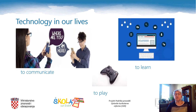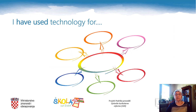In our lives we usually use technology to communicate with our family and friends. We use technology to learn — and you are learning now in your online lesson — and after you have learned, you use technology to play. Is that how you use technology? Your first task is to copy the sentence from the screen into your notebook: 'I have used technology for…' and you can draw a similar mind map, a kind of organizer, to add and organize your ideas.